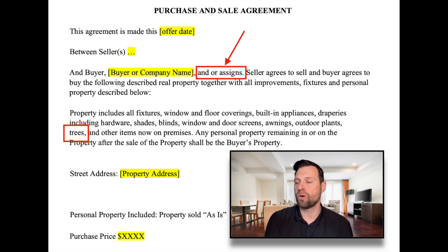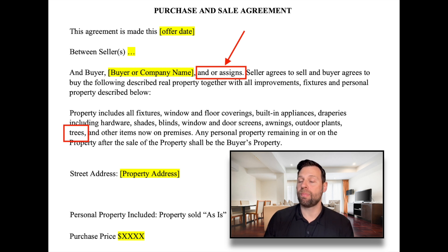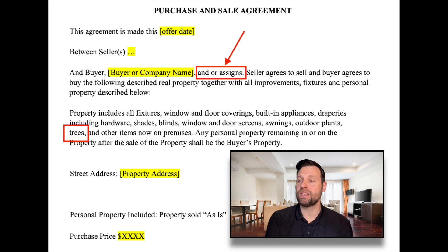What that tells me is that there's a good chance that the person that's presented me with this contract is a wholesaler. What wholesaling is, very simply put: the person presenting me with this contract will try and get my home under contract at a certain price, then try to assign that contract to an end buyer at a higher price and keep the difference. So although not definite, there's a good chance that the person presenting me with this contract doesn't actually intend to buy the home.